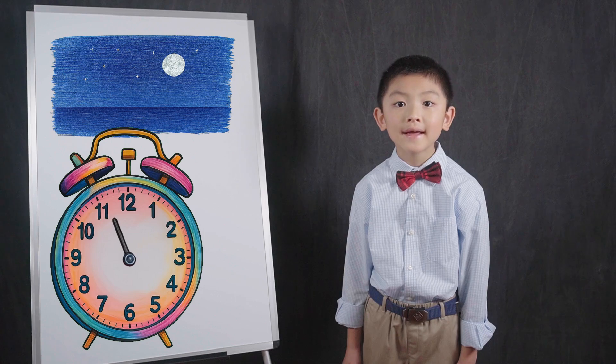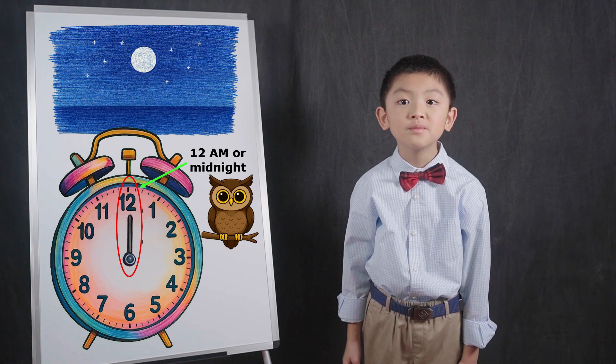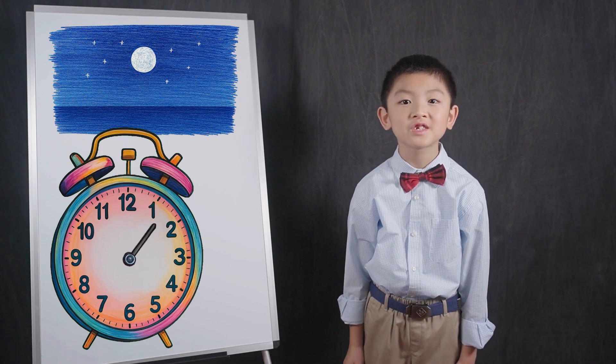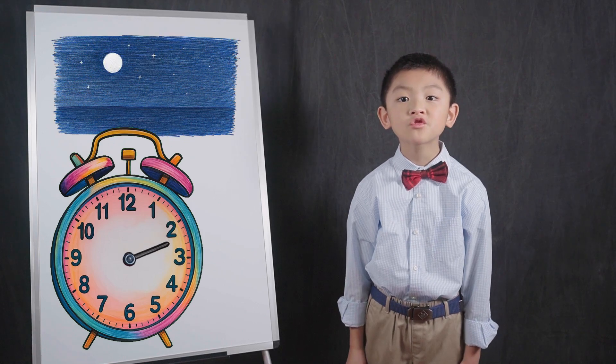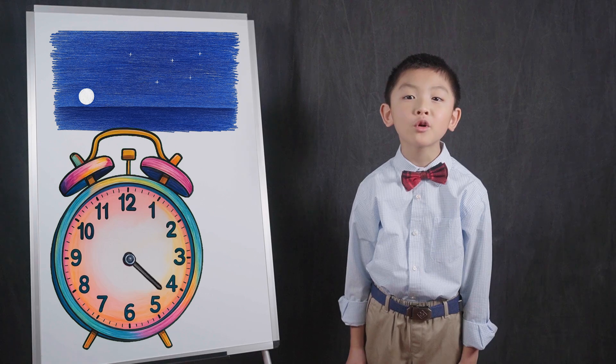The hour hand starts in the up position at 12 o'clock AM, which is midnight. It then travels to the right in a big circle. It first travels through the AM cycle. You can think of this as the morning cycle.